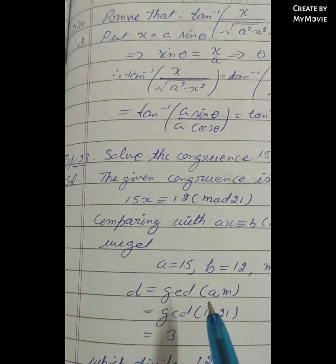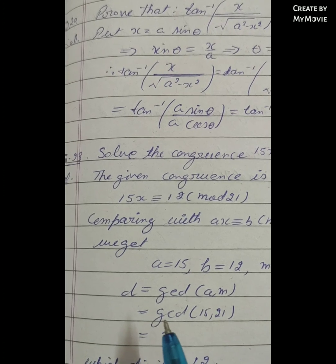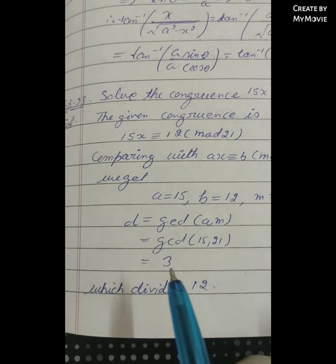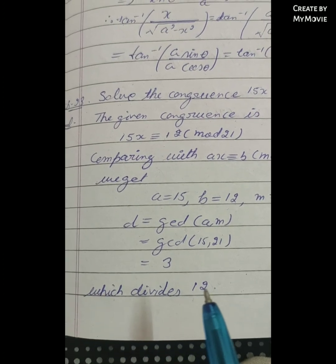Now d equals the greatest common divisor of a and m, which is gcd(15, 21) = 3, which divides 12.